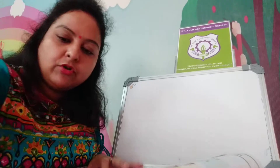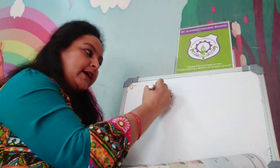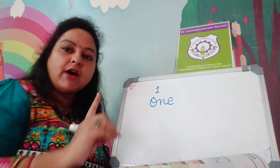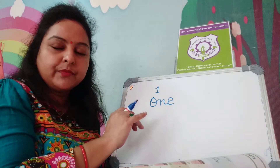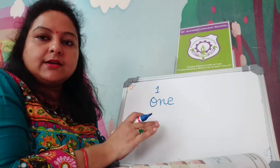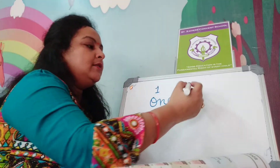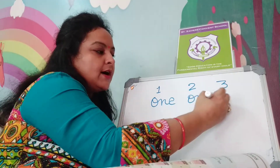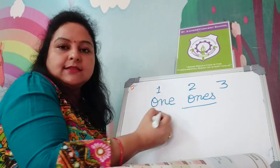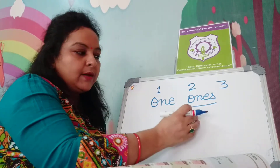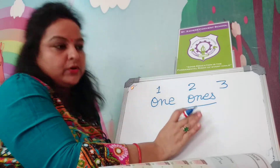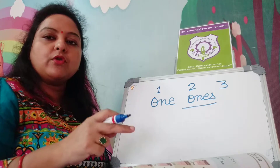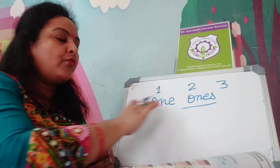Children, one more thing I want to tell you. If you write number 1, you will write the spelling 'one' only, not 'ones', because it is singular. If more than 1 comes — suppose 2 or 3 ones — you will write 'ones'. You will add S at the end of the spelling 'one'. It becomes plural. So many ones makes 'ones'.